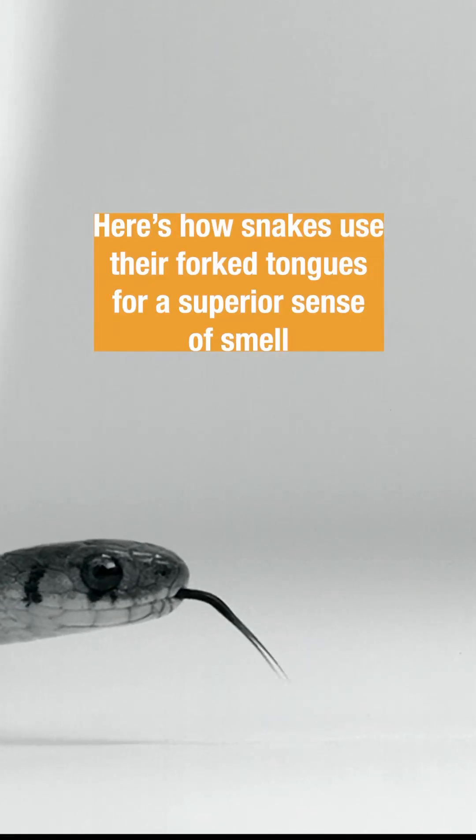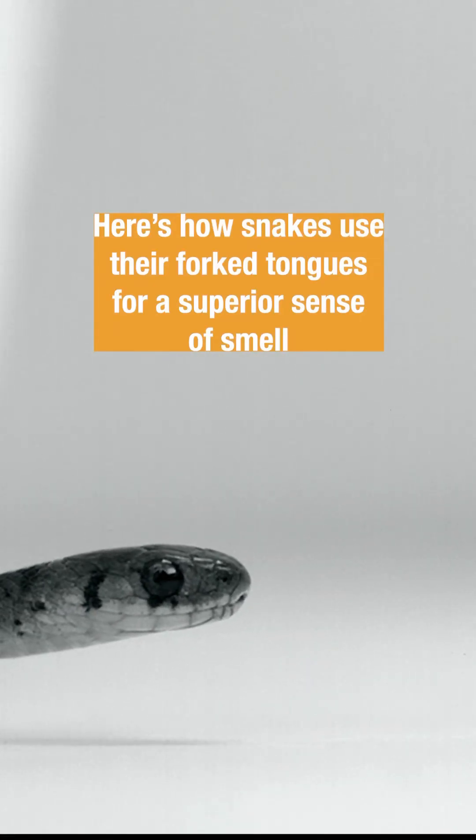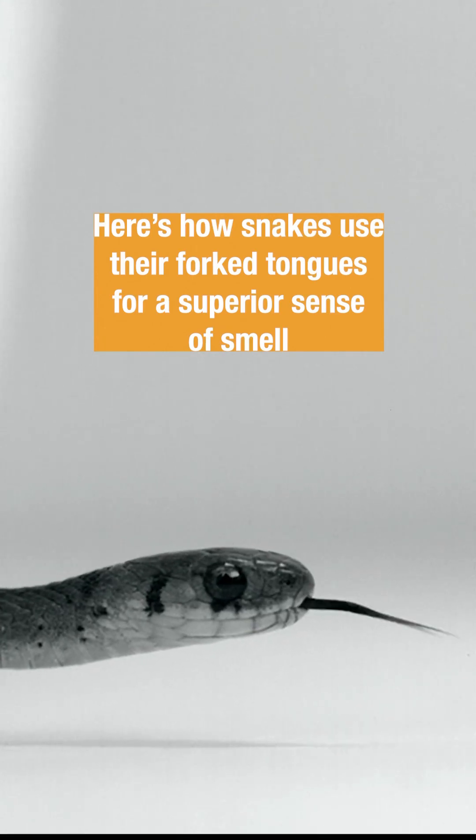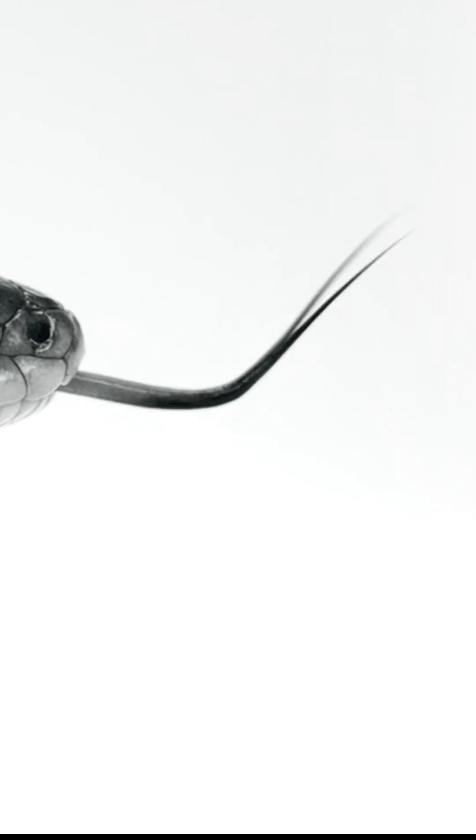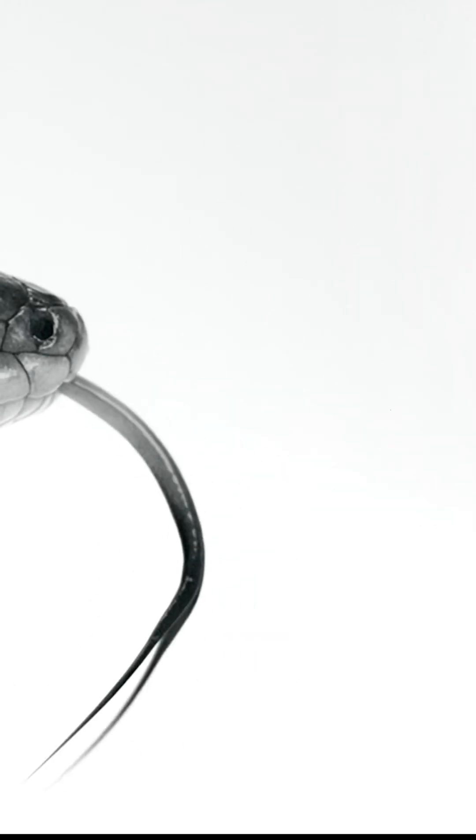Researchers at the University of Connecticut set up high-speed cameras to take a closer look at that forked tongue. In a single one-second flick, they captured how a snake waves its tongue up and down up to 15 times.